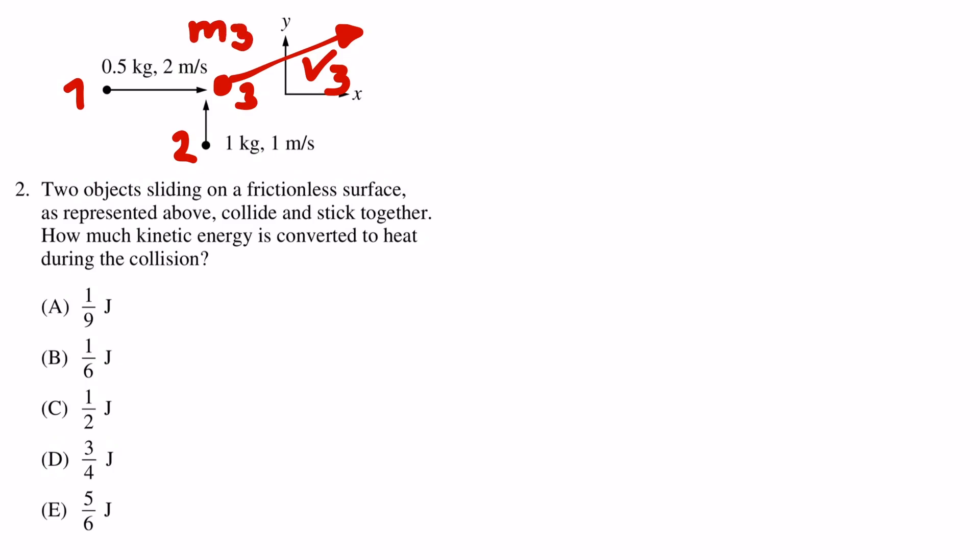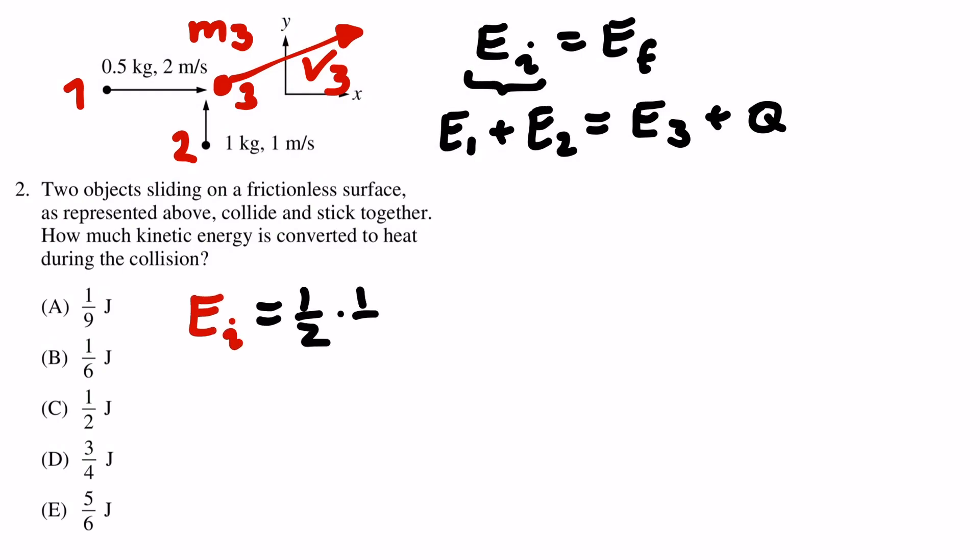The problem asks us to calculate the amount of energy that is converted to heat during this collision. In a kinematics problem like this, we always look at energy conservation and momentum conservation. Energy conservation tells us that the energy before the collision equals the energy afterwards, including whatever amount is converted to heat. These energies are kinetic energies that we calculate as m over 2 times v squared. Using the given values, we can calculate the initial energy to be 3 over 2 joules.